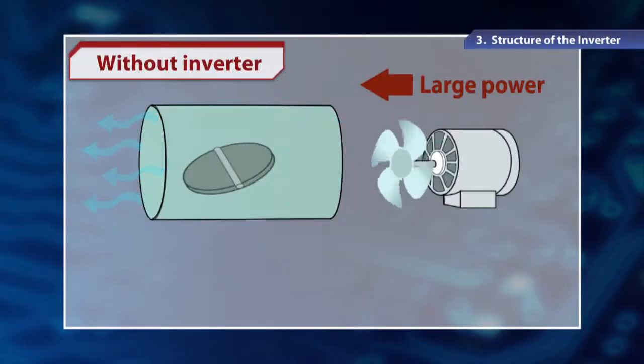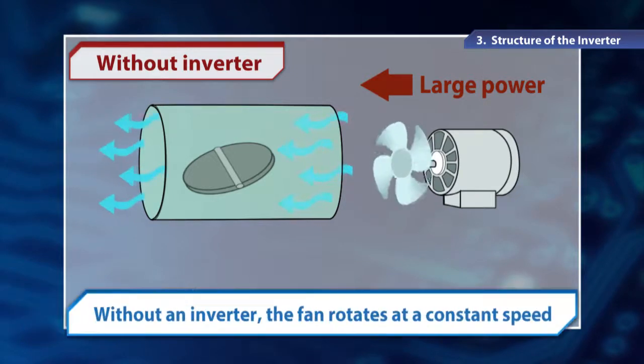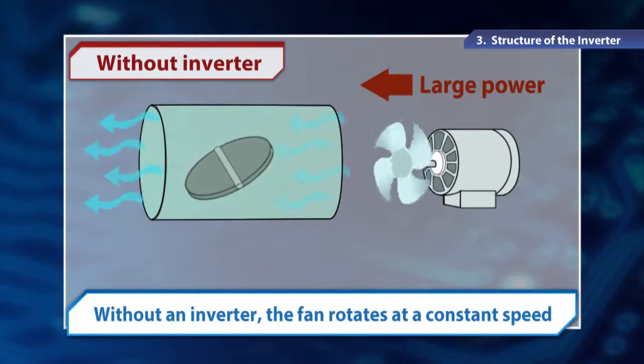When a fan runs without an inverter, but by a commercial power supply at a constant voltage and frequency, the fan rotates at a constant speed. To reduce the airflow, dampers are used, but since the motor continues to use power, it is wasted.